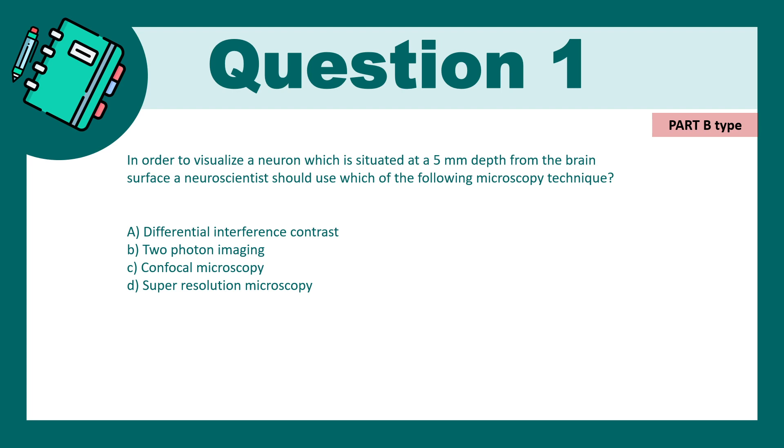In order to visualize a neuron situated at five millimeter depth in the brain, which microscopy technique should neuroscientists use? Differential interference contrast, two photon imaging, confocal microscopy, super resolution microscopy. If you've understood the lecture properly the correct answer is option B.